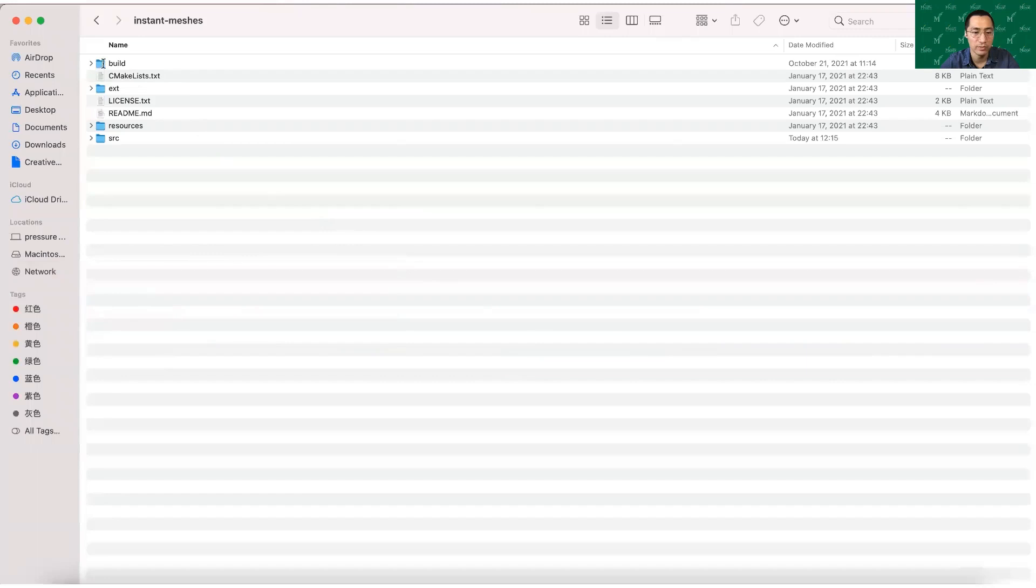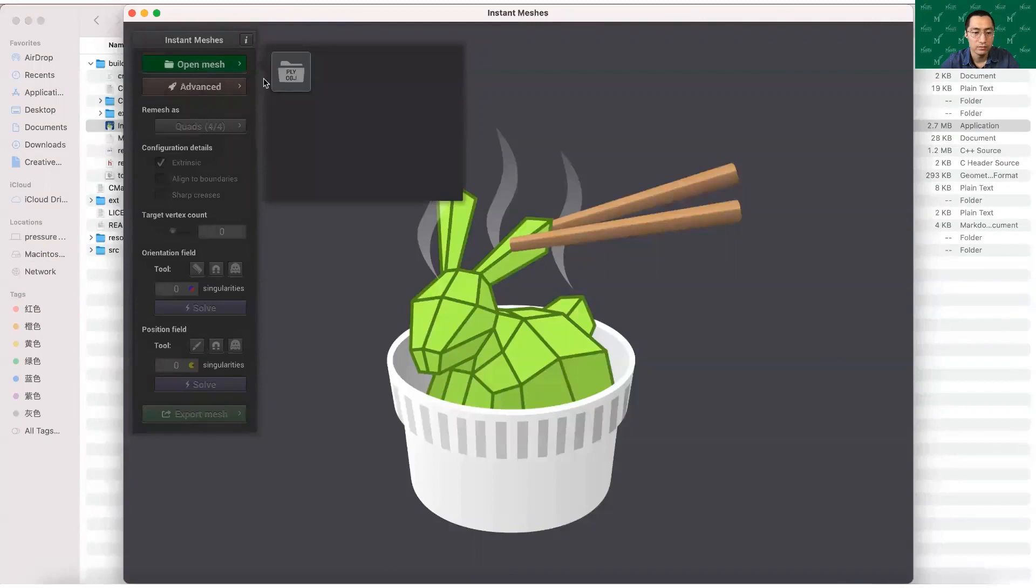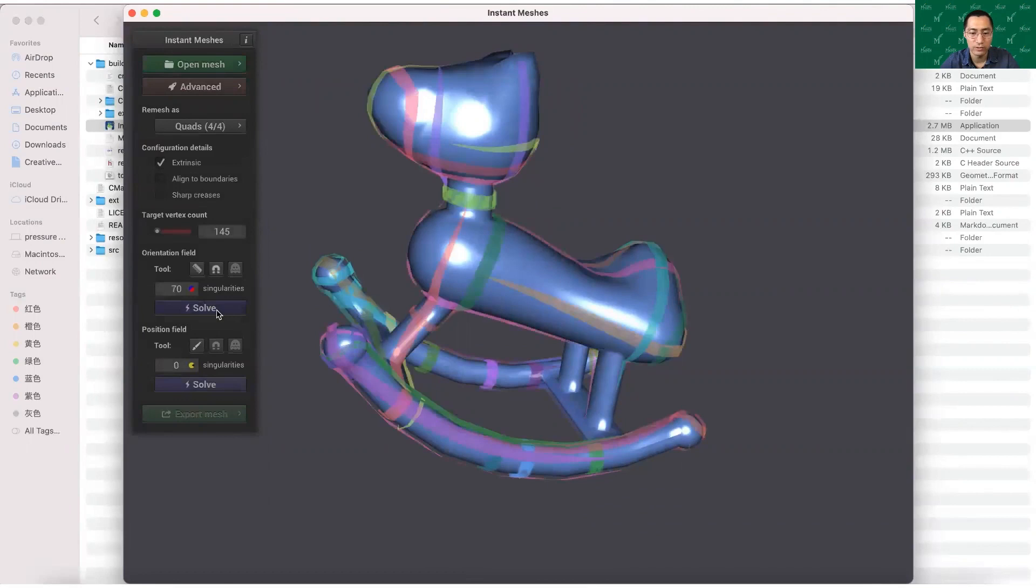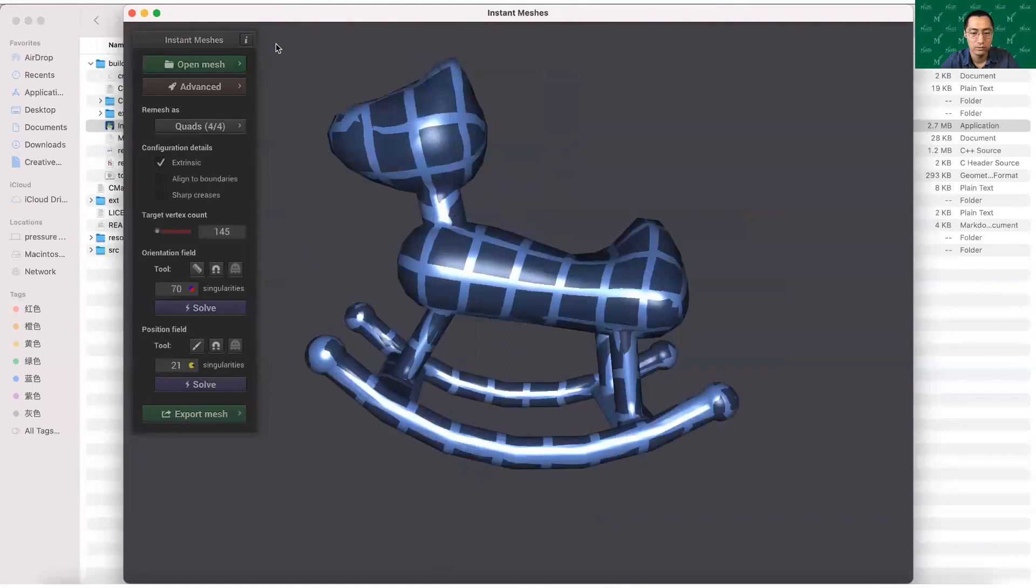After building the project, we get an executable file. We open the application, and load a mesh file. After clicking the two solve buttons, it will call the function, and generate the final results.